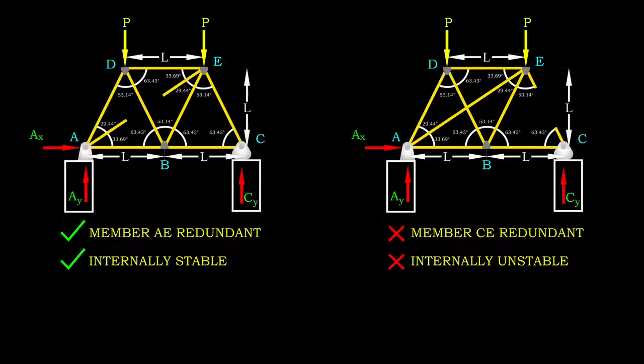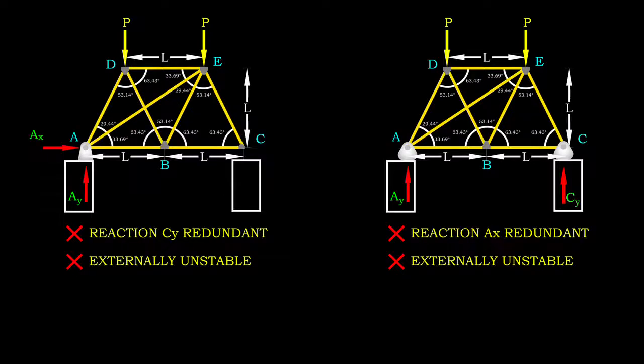The redundant member is simply assumed cut, and therefore, no force should be carried by it. At this point, the primary structure is produced, and it is ready to be solved using equilibrium equations. Making a reaction force redundant is not an option here, since the structure will be externally unstable after removing either force.